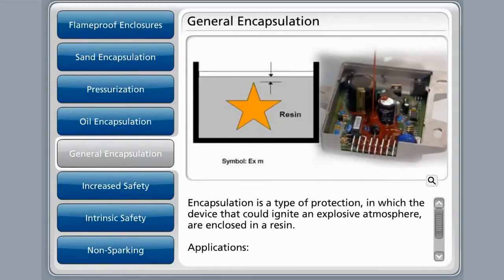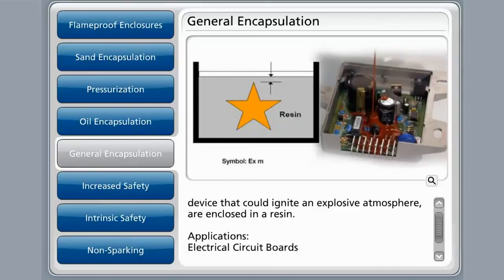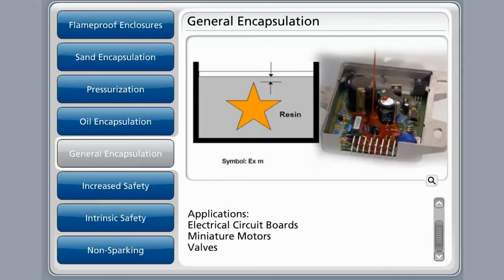Encapsulation is a type of protection in which devices that could ignite an explosive atmosphere are enclosed within a resin. The material used would be resistant to environmental influences, heat, and sparking from electrical components. The general application for this protective method would be used for electrical circuit boards, miniature motors, and valves.